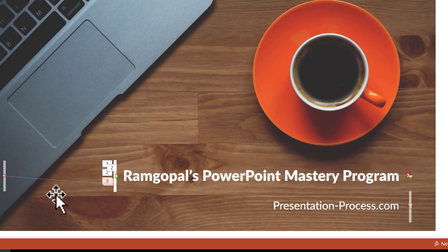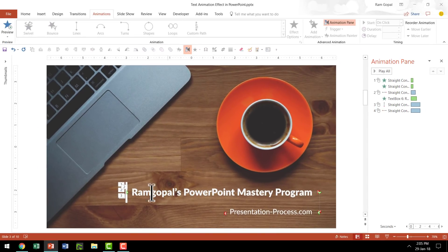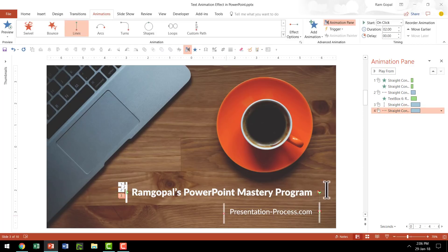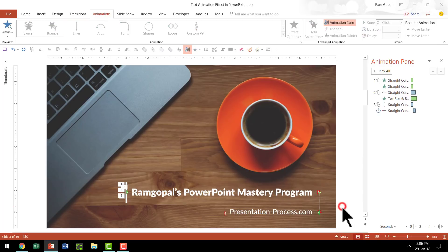Now we need to add one more animation that takes the line from here all the way to here, revealing this text in the process. I select the same line, go to add animation, choose lines, and this time the effect options is going to be to the left. The end point of the animation now needs to be here. So we have one animation going from here to here, the next from here to here, and the third from here to here — a chain of animations. The second animation needs to happen after previous, and we are going to have both these animations run for around 0.5 seconds each, so that in total it is a one-second animation.